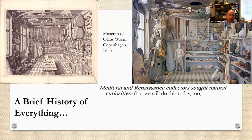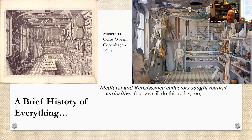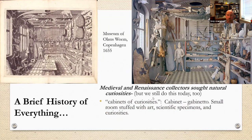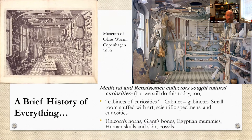This is the museum of Olaus Worm in Copenhagen, and that's a drawing from 1655, and then a more modern interpretation of those things that were in that drawing — taking a look at what was in the drawing and trying to figure out what they actually were. A cabinet of curiosities, from the Italian 'gabinetto,' is a room stuffed with art, scientific specimens, and curiosities — whatever the collector found interesting. Some of these listed unicorn horns, giants' bones, Egyptian mummies, human skulls, and fossils, some of which we now think we know are real or not.